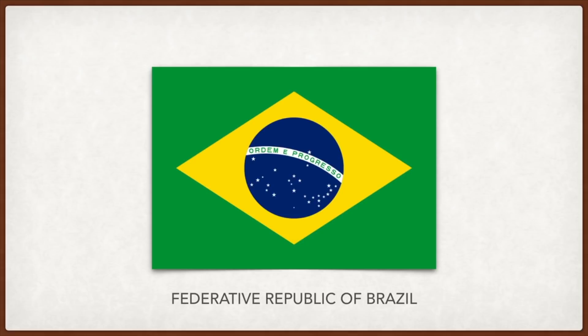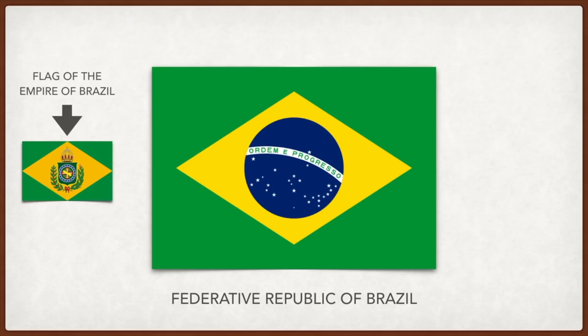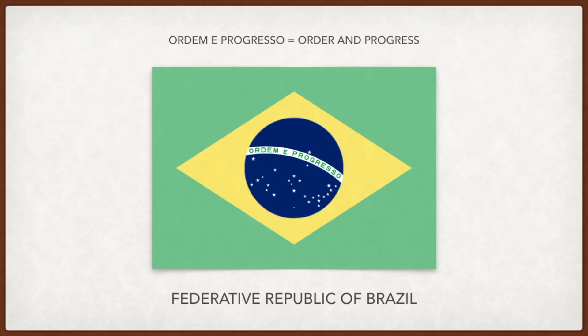The 27 stars represent the 26 states plus the federal district, and their position on the flag is supposed to be the position of stars over Rio de Janeiro on November 15, 1889, when Brazil became a republic. Pakistan: the green represents the Muslim population and the white stripe represents the religious minority; the moon and star symbolize progress and light.